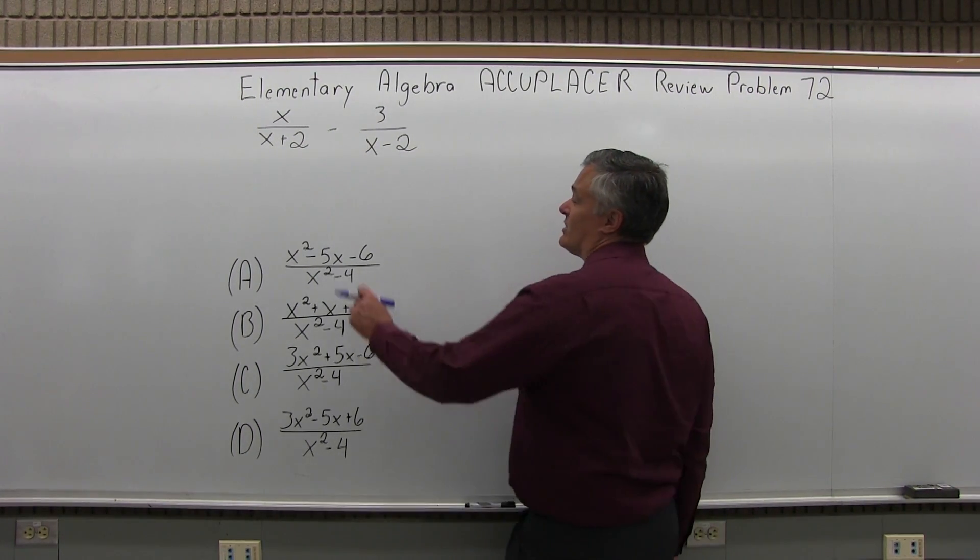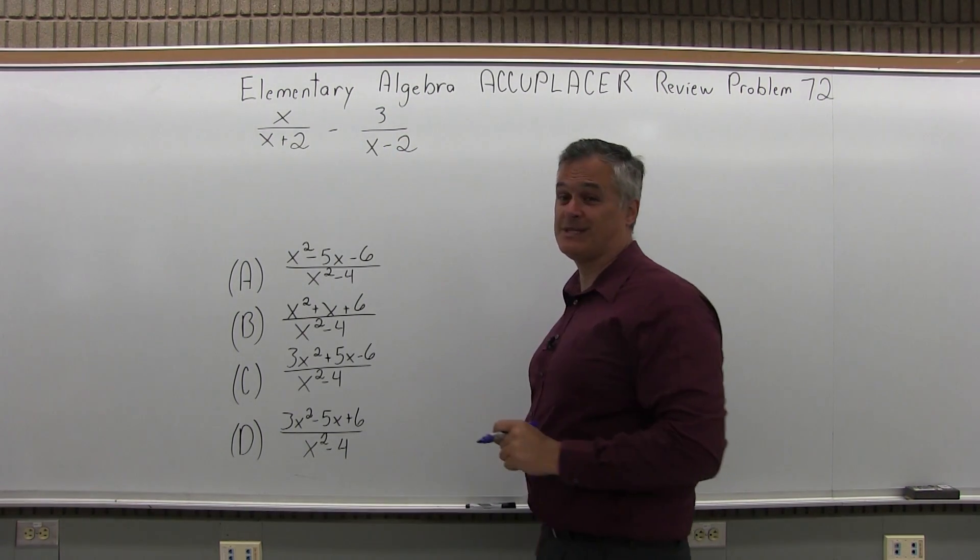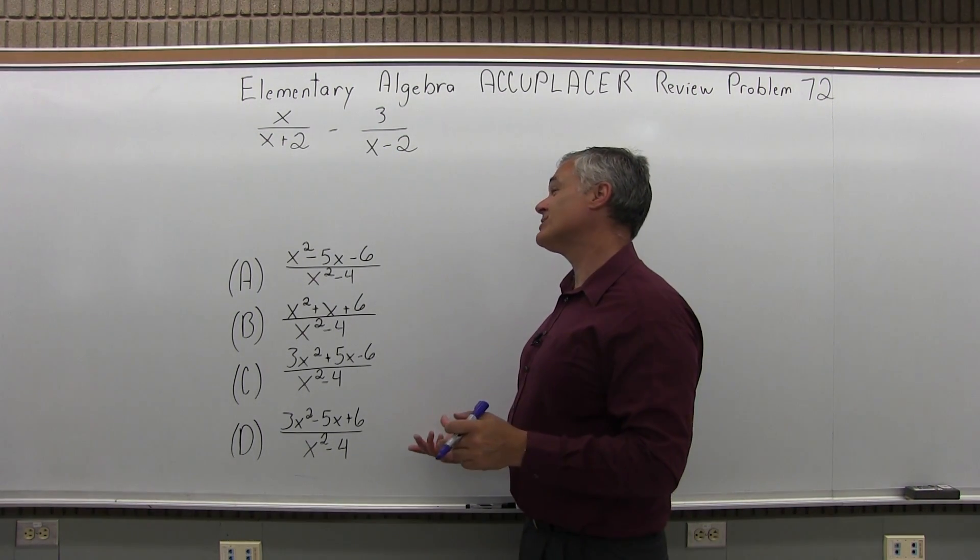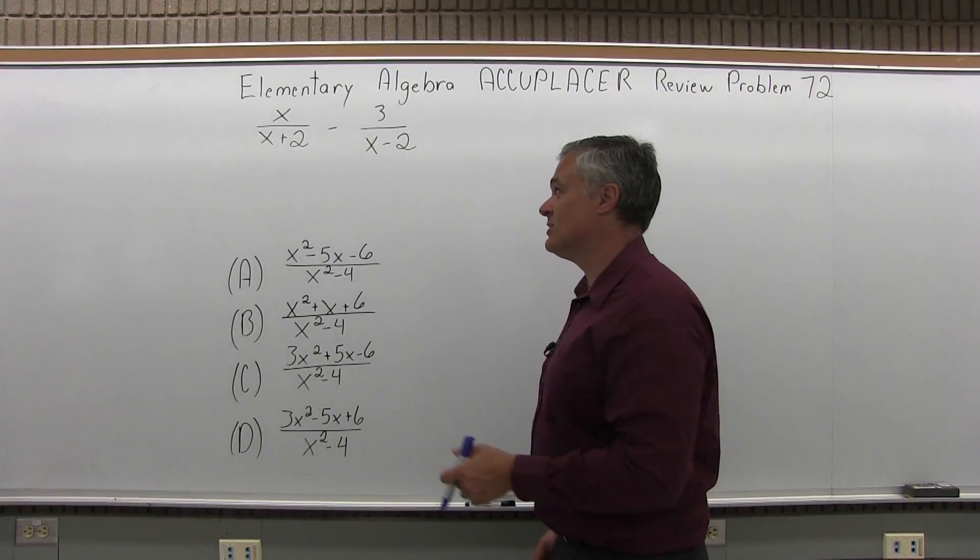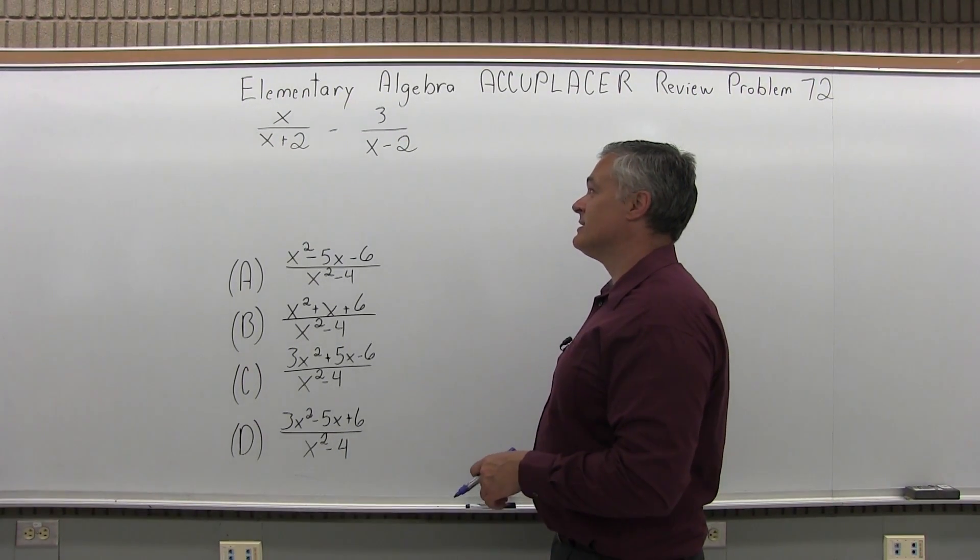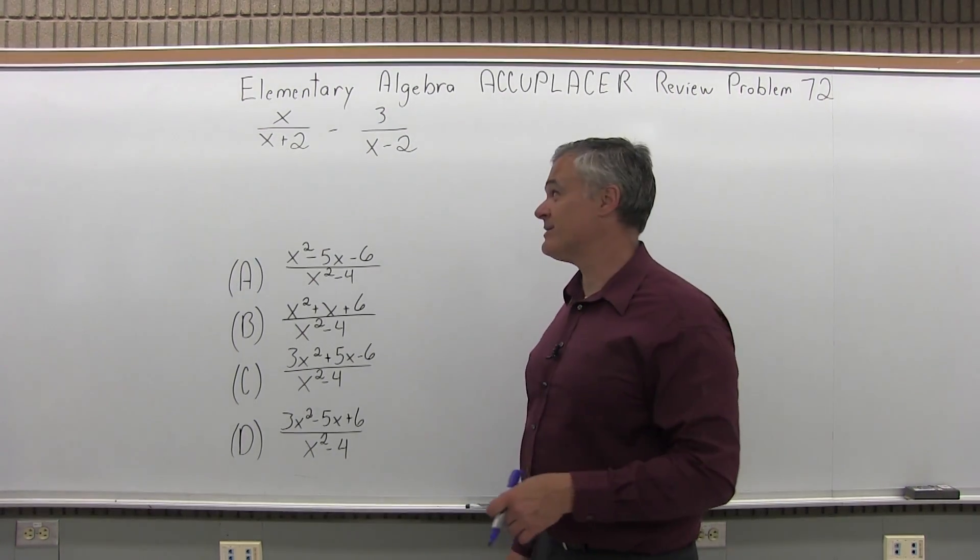It's unfortunate that the denominators are not the same. They're almost the same. If they were both over x plus 2 or both over x minus 2, the problem would be super easy. You could just combine the tops. But there's some work to do to make the denominators the same.